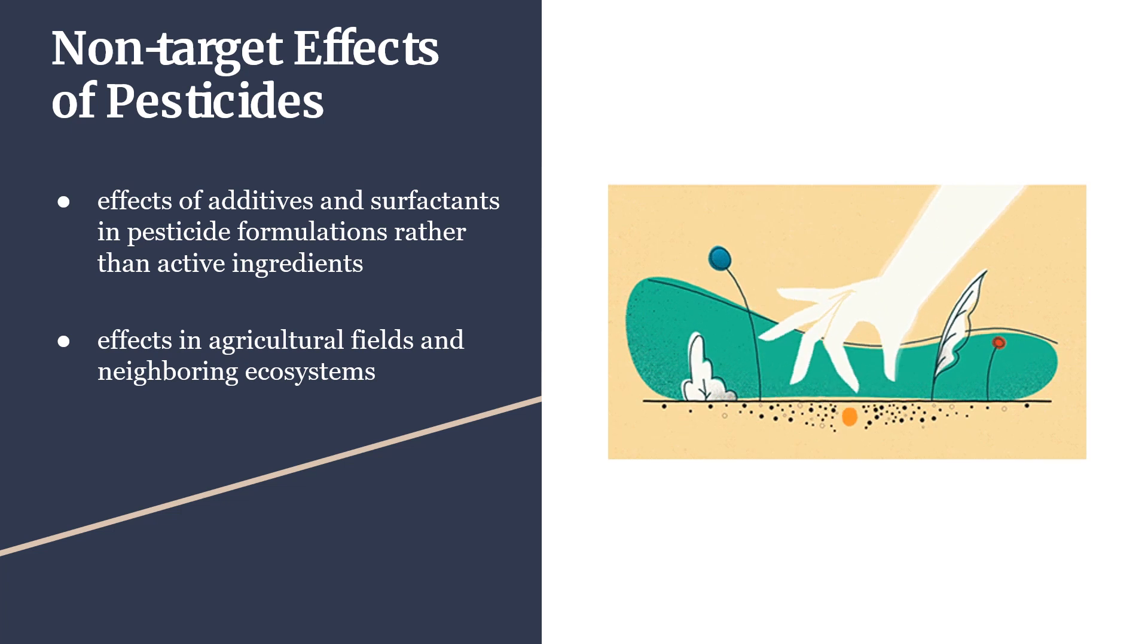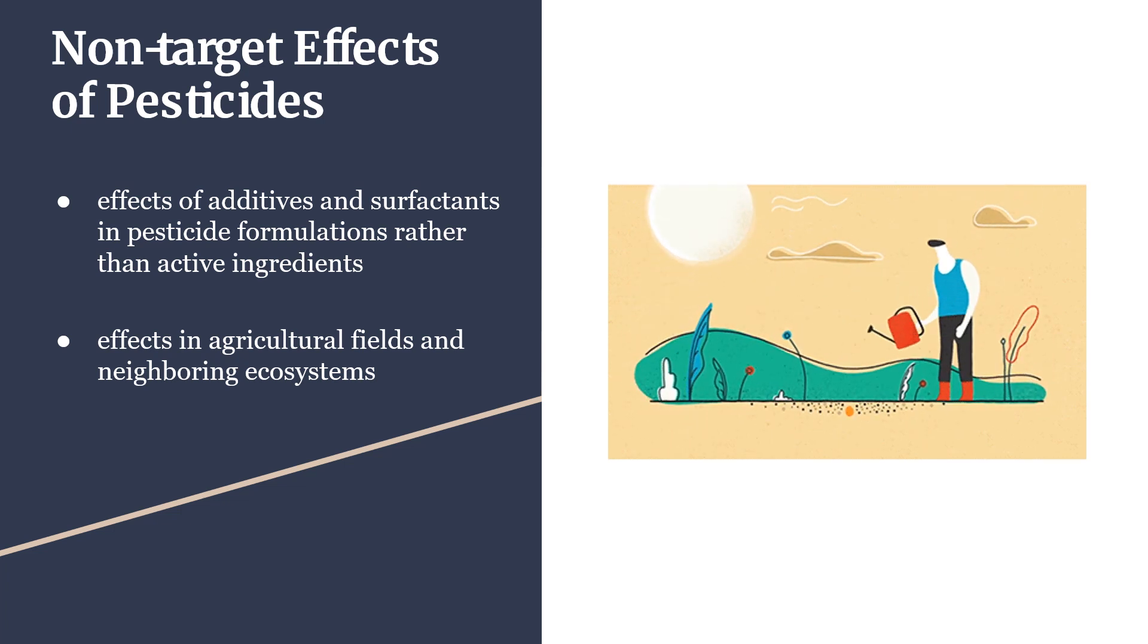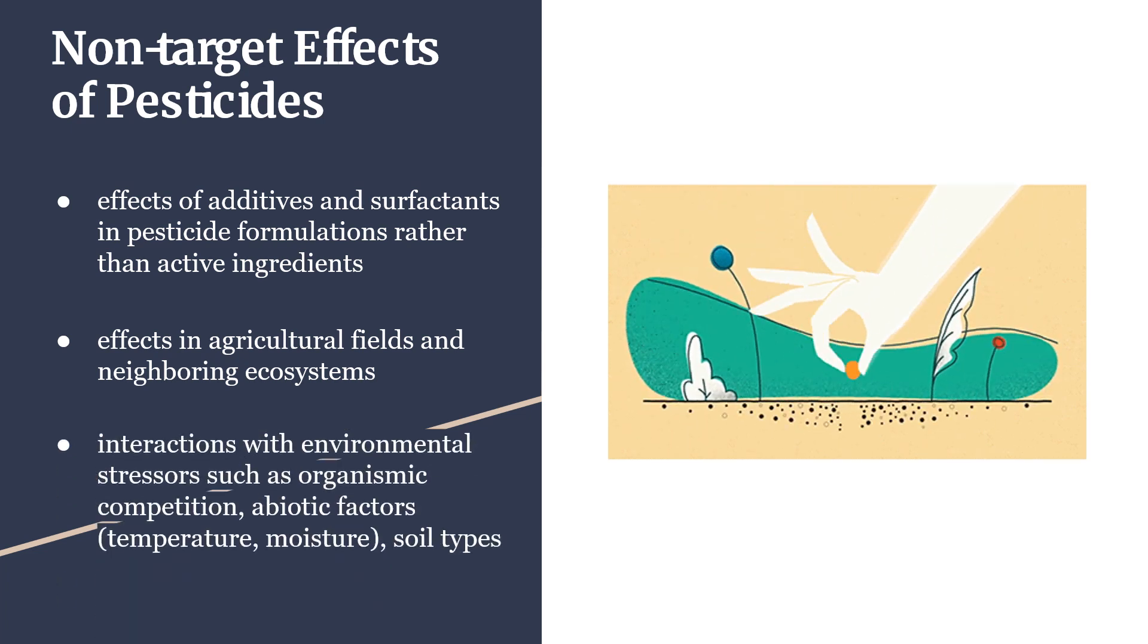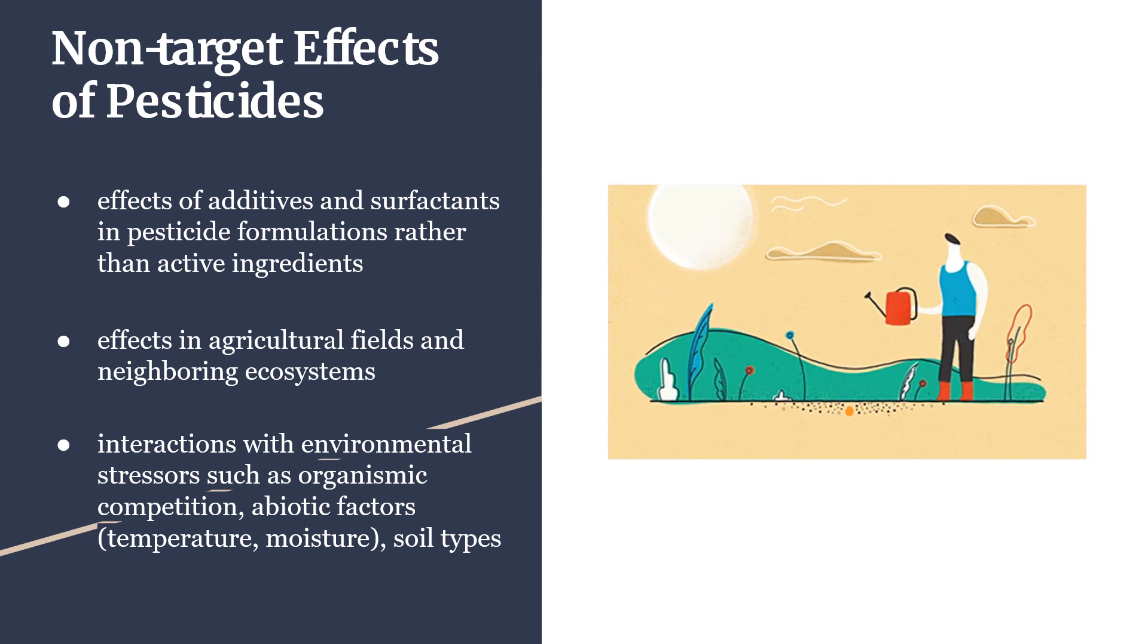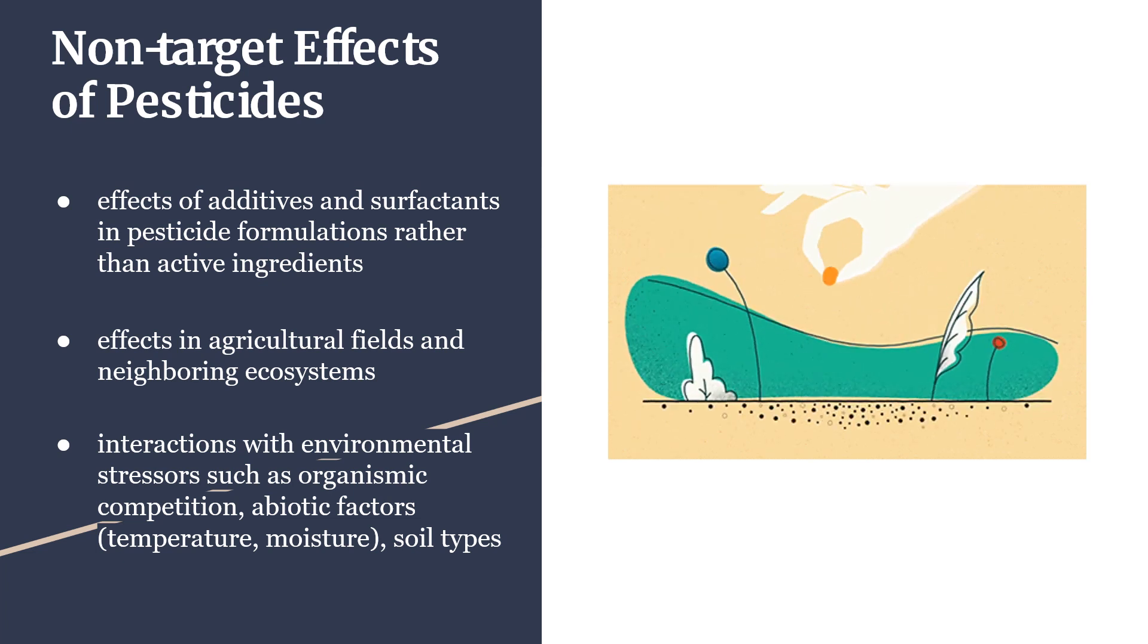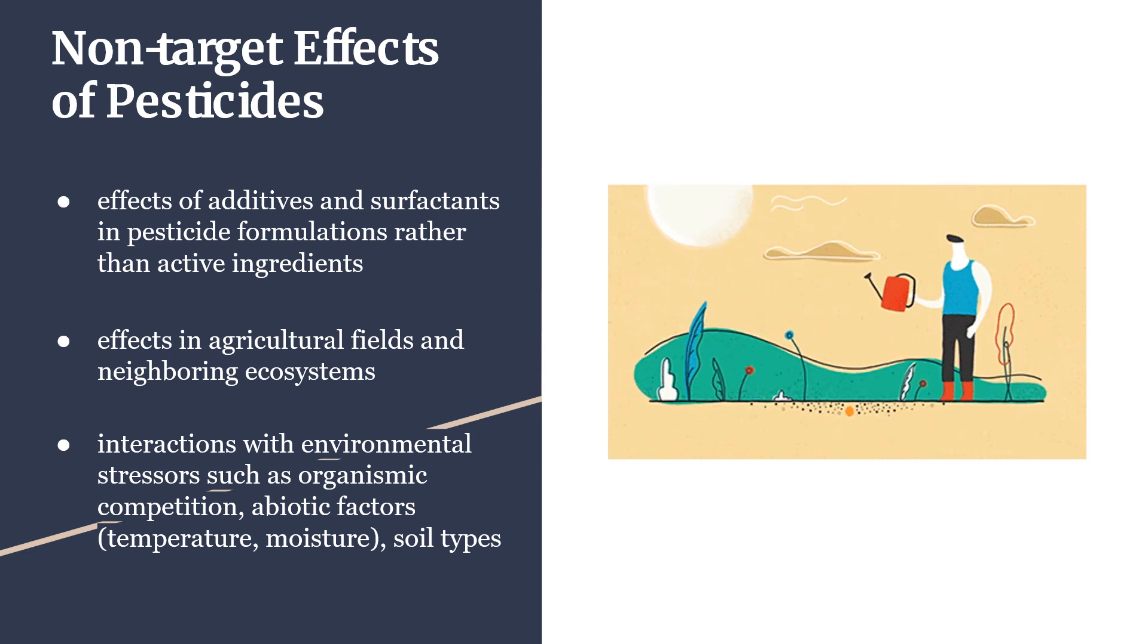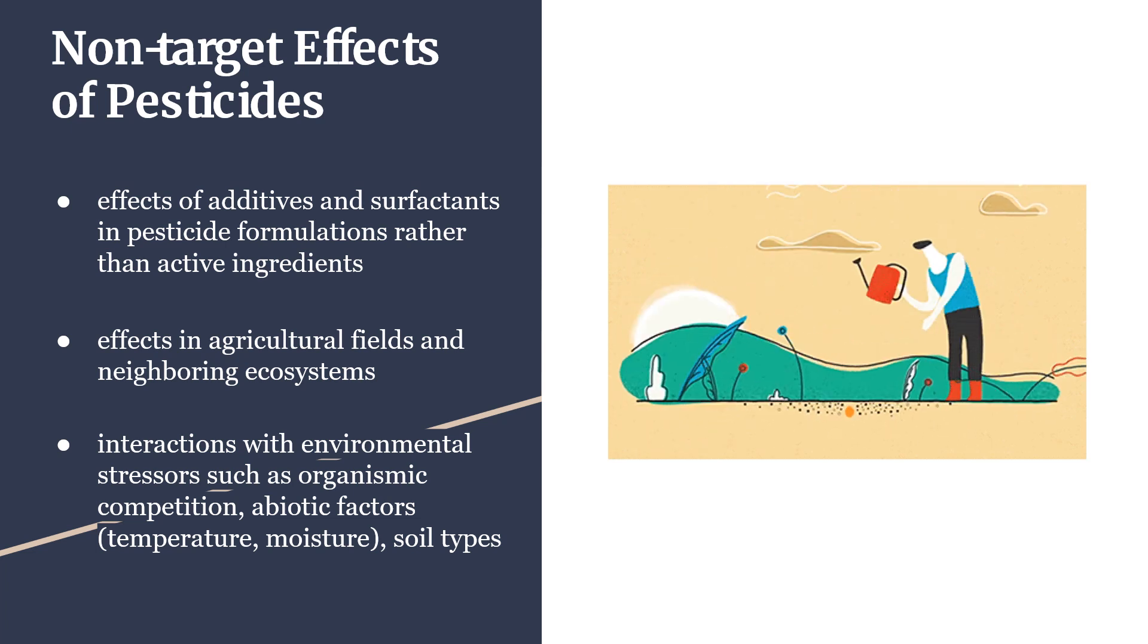Effects in agricultural fields and neighboring ecosystems, and interactions with environmental stressors such as organismic competition, abiotic factors like temperature, moisture, and soil types.